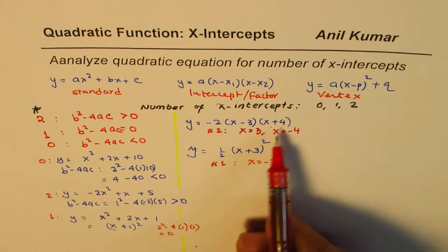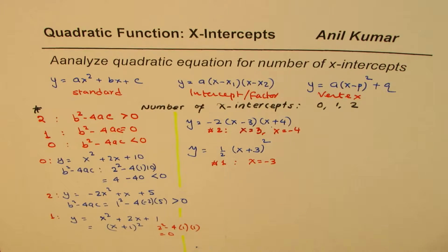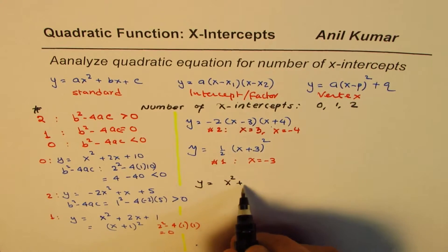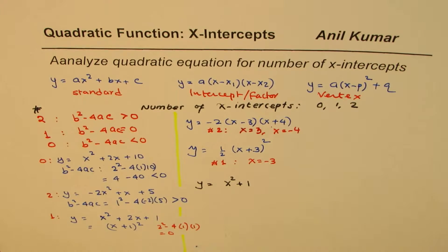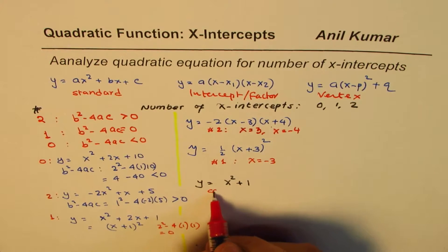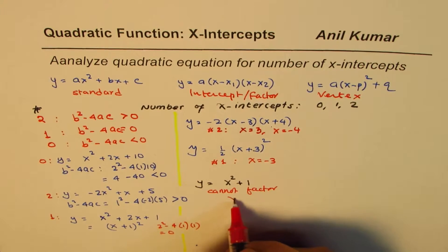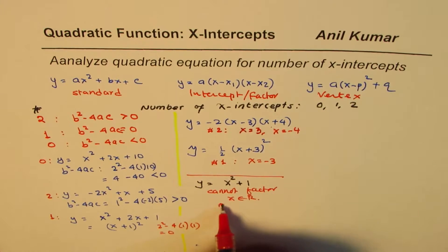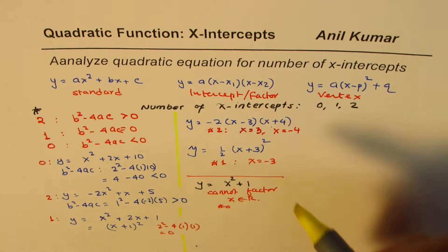An exception: if I write x² + 1, that equation cannot be factored for real numbers, so it has 0 x-intercepts. But if you can factor an equation, you know you have either 1 or 2 x-intercepts.